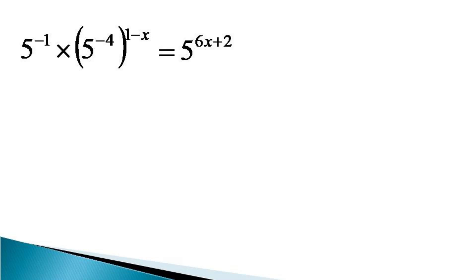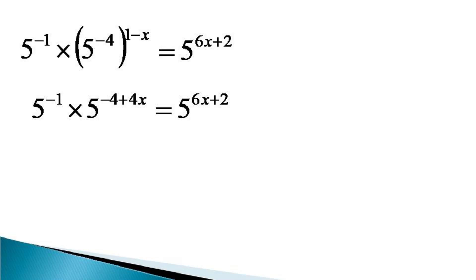The powers are multiplied on the right hand side. The powers are also multiplied on the left hand side, and the equation becomes 5 raised to the power minus 1 into 5 raised to the power minus 4 plus 4x, equal to 5 raised to the power 6x plus 2. On the left hand side, the powers are added and the equation becomes 5 raised to the power minus 5 plus 4x, equal to 5 raised to the power 6x plus 2.